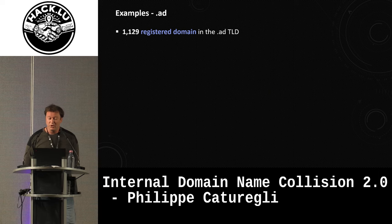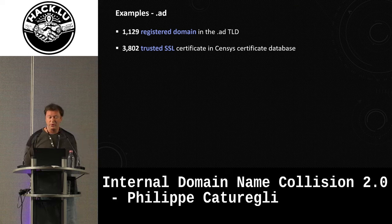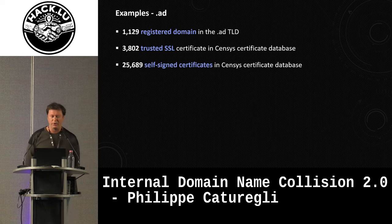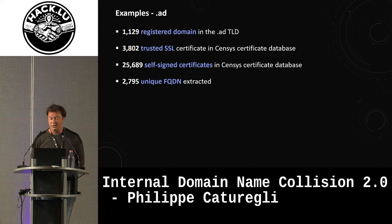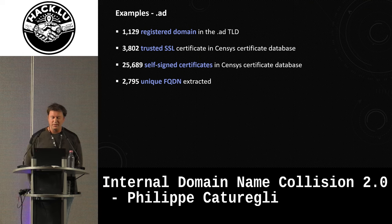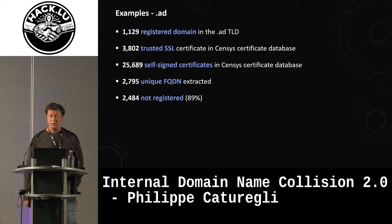.AD was a pretty interesting TLD. Overall it's a fairly small TLD with only about 1,100 domains registered. When we did our research, we found about 3,000 trusted SSL certificates — about average — but we found 25,000 self-signed certificates, indicating far more people using this TLD than those who should be. Out of those 25,000 self-signed certificates, there were about 2,700 unique FQDNs. When there are more FQDNs extracted than actual registered names, something is clearly off — and 89% of domains found on this TLD are not registered but used internally.